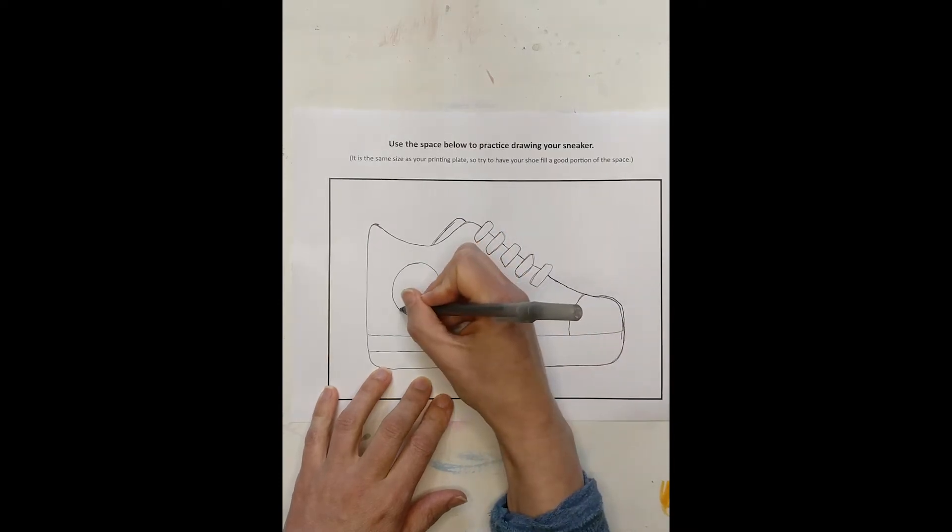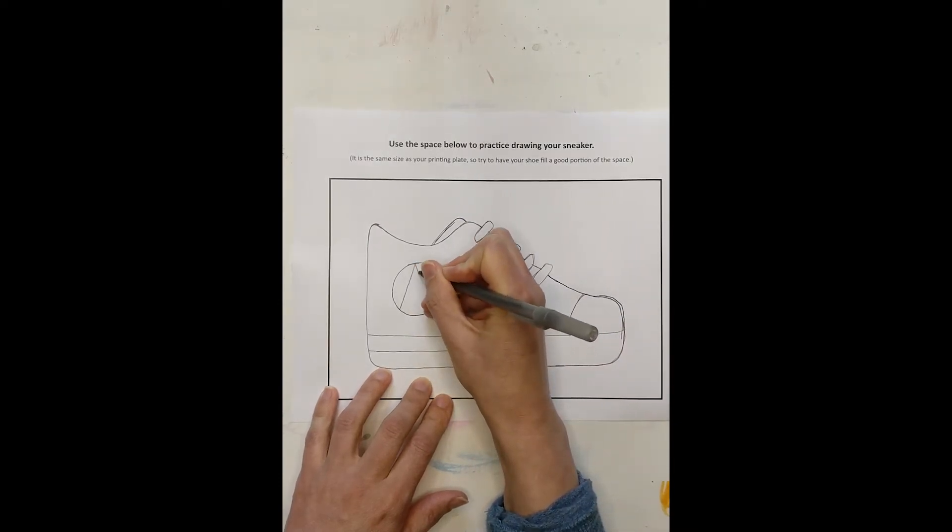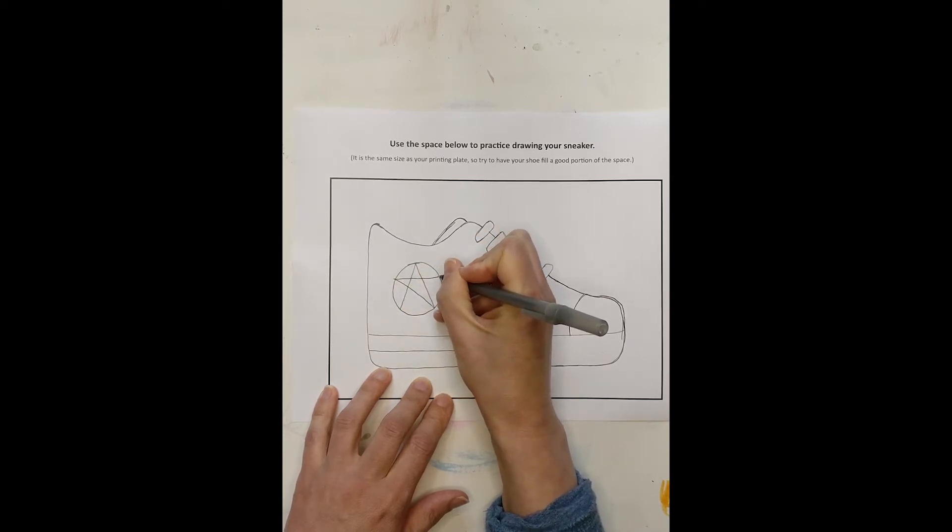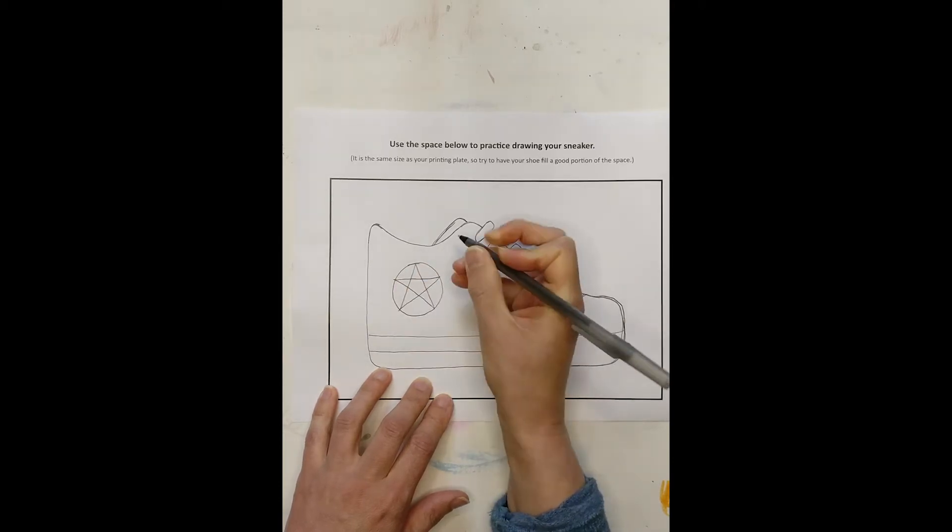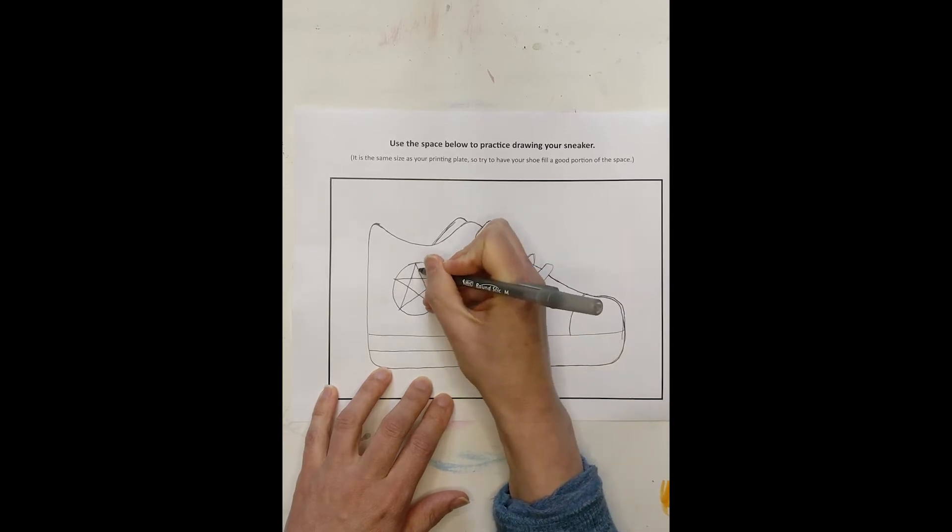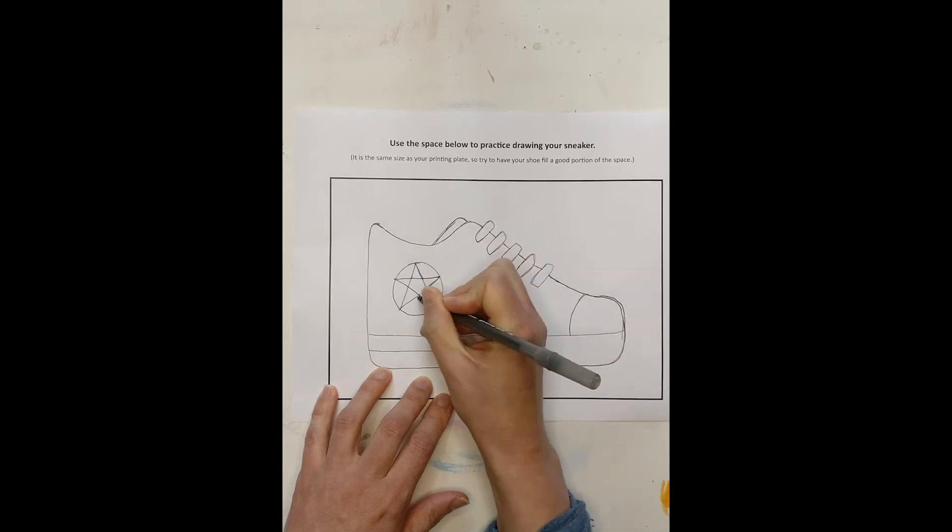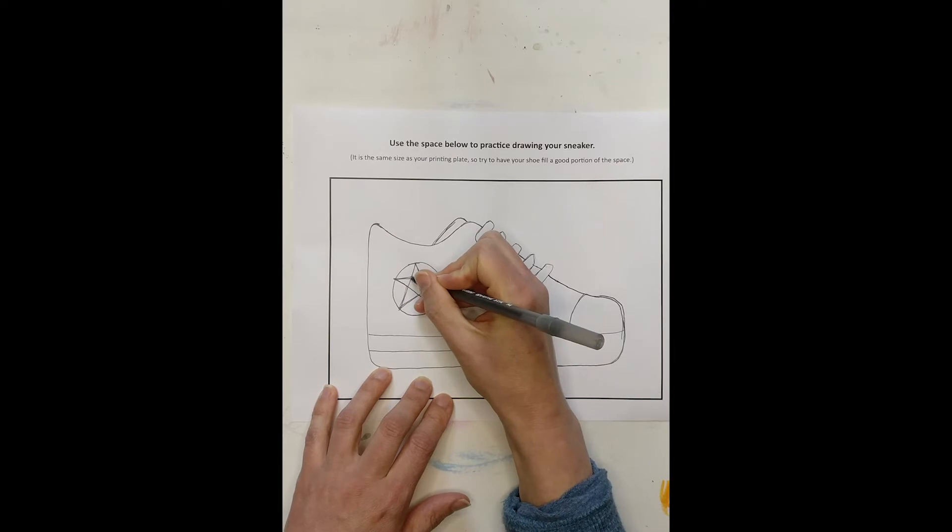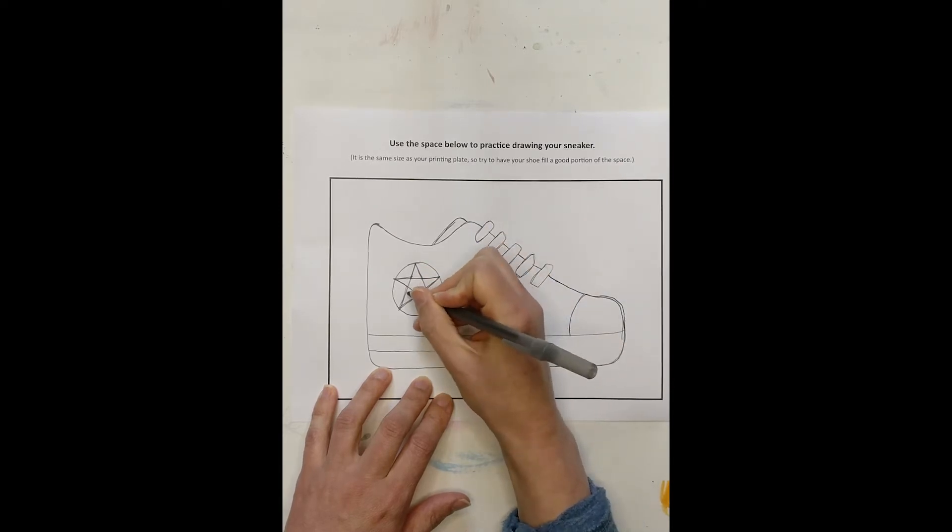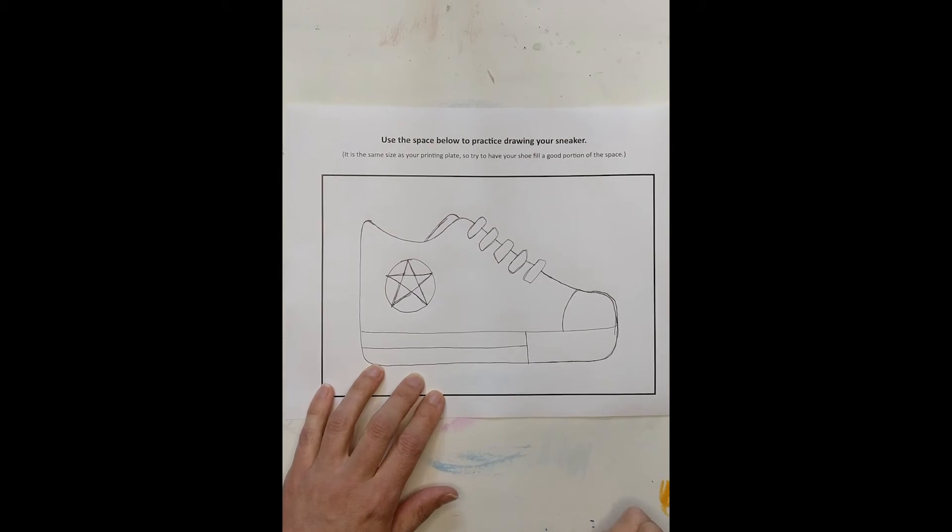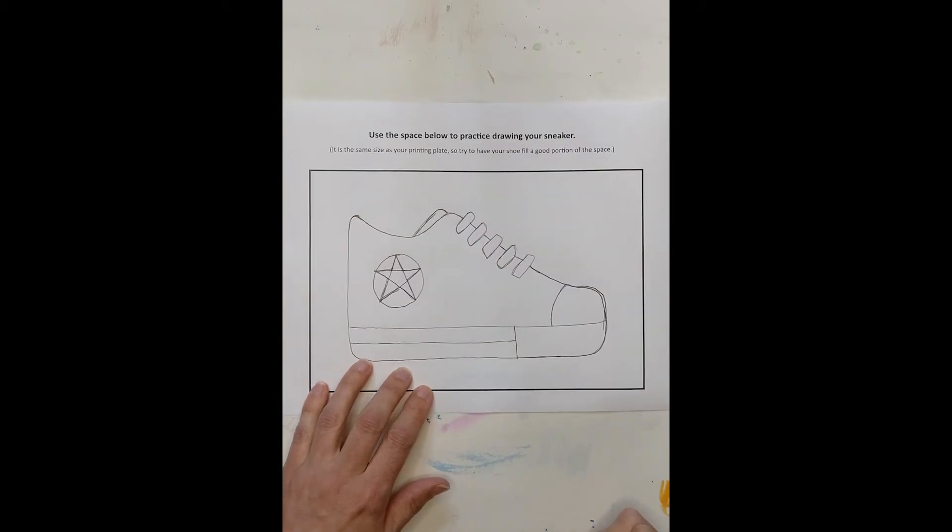I'm going to go ahead and do a star just like this. But then when I go to put this on my printing plate, I'm just going to do the outer edges. So I'll outline those as a reminder to myself right now. That way, I'm not going to do the inside. So there's kind of my knockoff Converse sneaker.